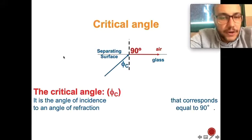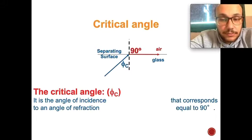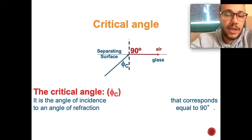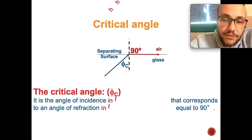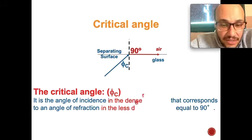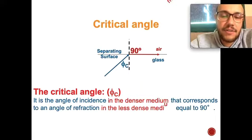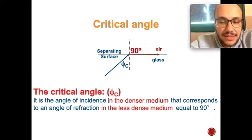Let's define the critical angle: it is the angle of incidence in the denser medium that corresponds to an angle of refraction equal to 90 degrees in the less dense medium. Keep this in mind—denser medium means a higher refractive index value.